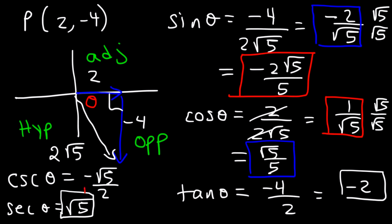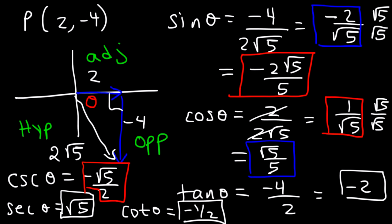Tangent is negative 2, so cotangent is negative 1 over 2 — you just flip it. And so that's it for this example.